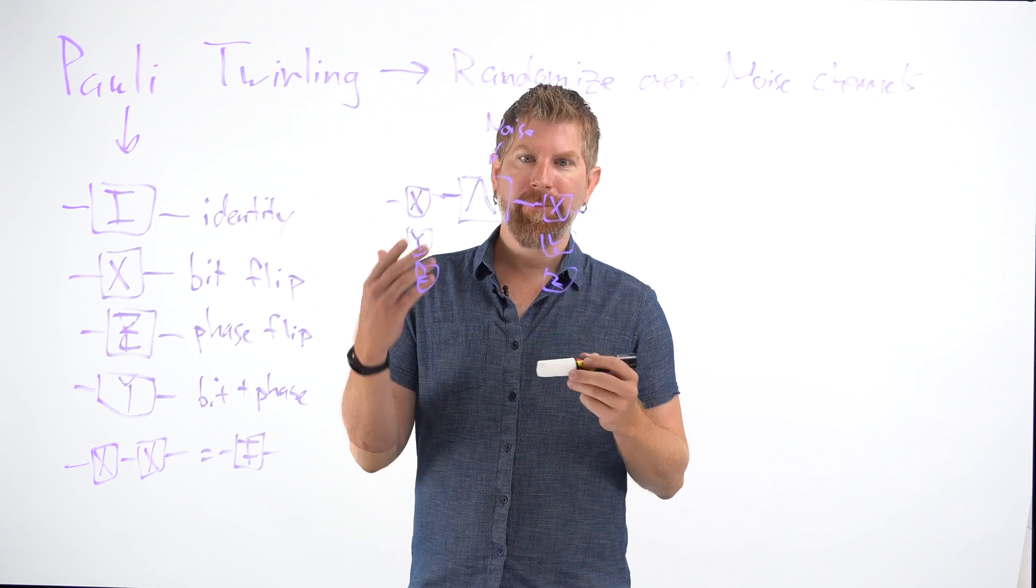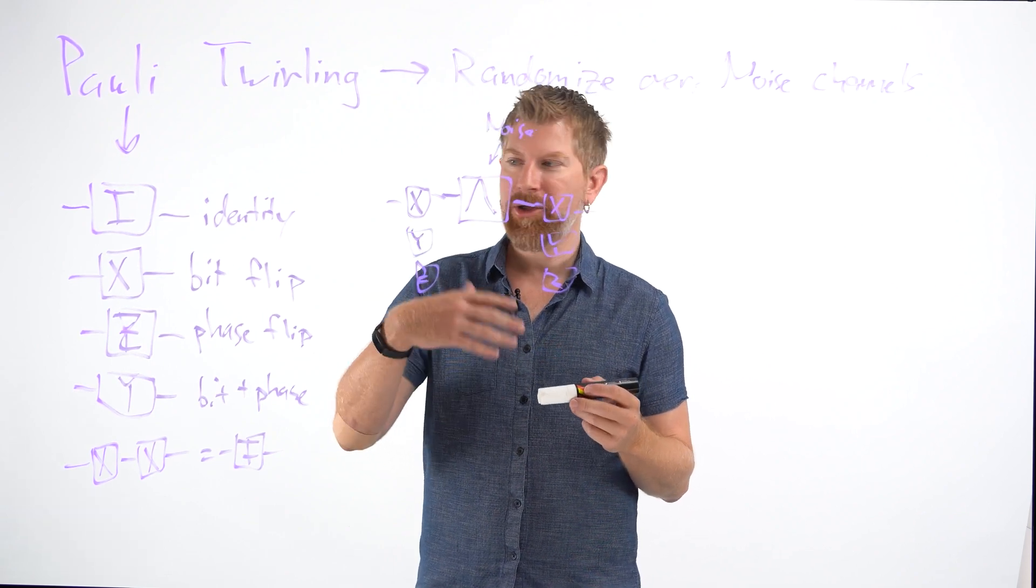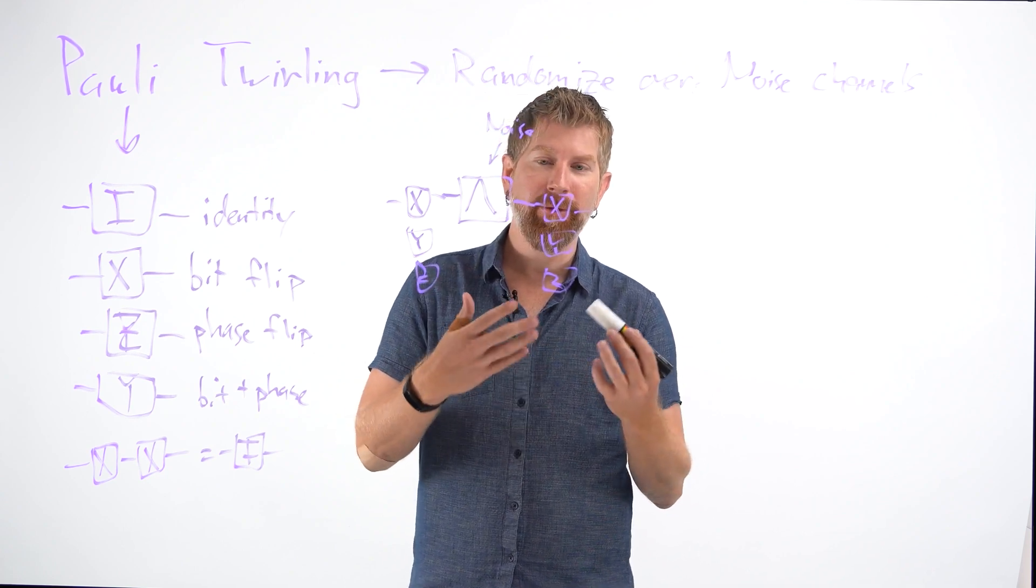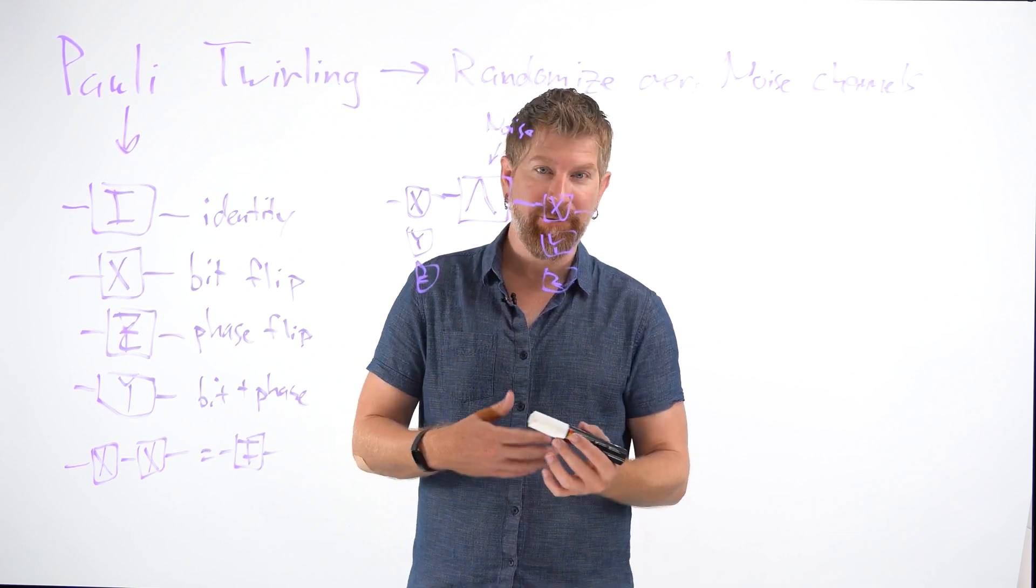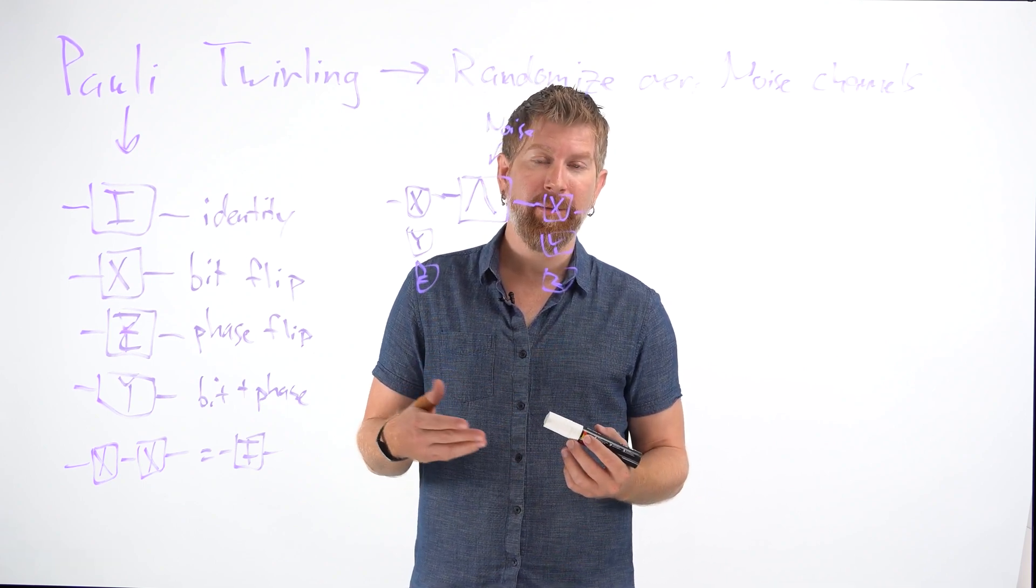Okay, so in this way we have a noisy process and we want to essentially change the state of the qubit over this process by which we can average over the noise in a way that we can get better results via error mitigation.